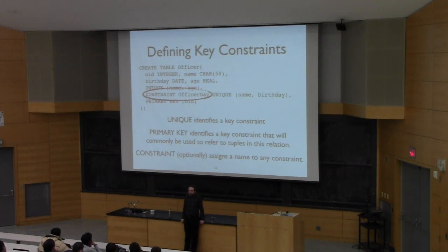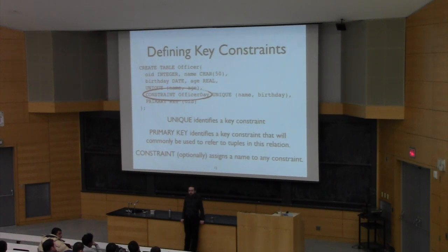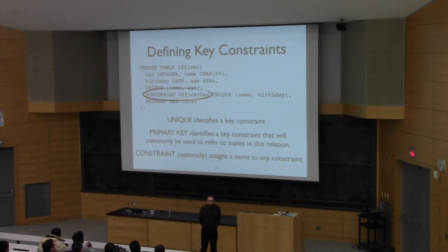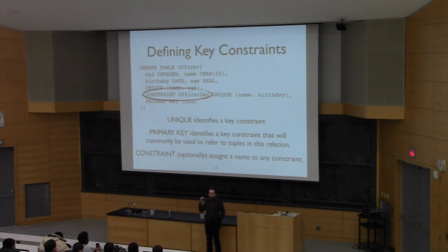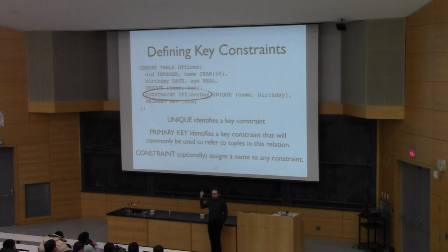Primary key also inserts a NOT NULL domain constraint in many databases. Regarding unnamed constraints: the database will usually pick an arbitrary name to refer to that constraint — it won't be nearly as readable as a name like 'officer_day', but there will almost always be some generated name.